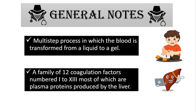Second, it's a family of 12 coagulation factors numbered from 1 to 13 — it's 12 factors because there is no number 6. Most of these are plasma proteins produced by the liver, so if there is any problem in the liver, we will have abnormalities in this cascade.